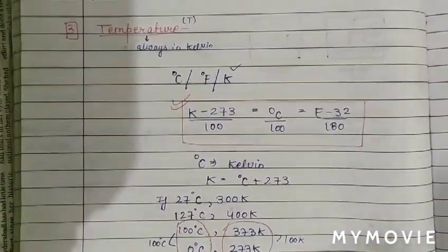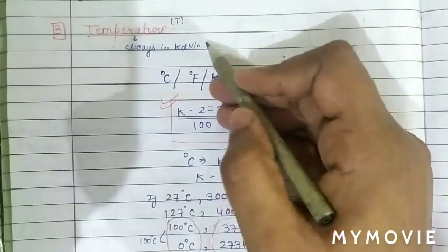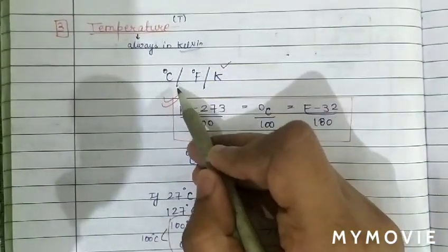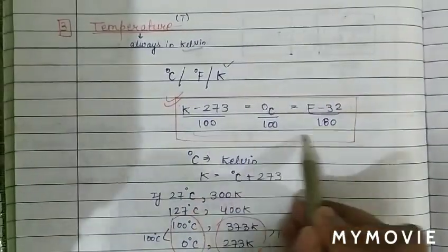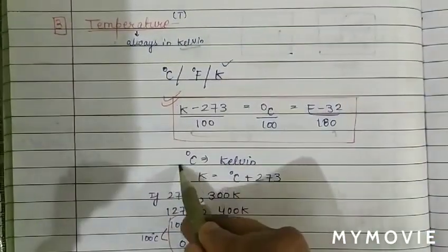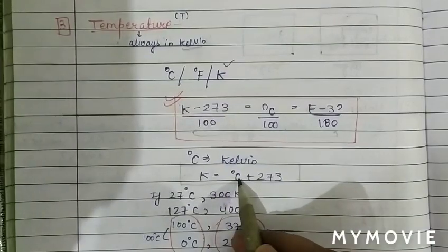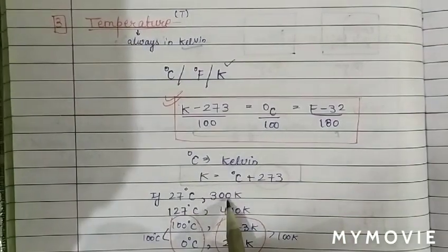The next measurable property is temperature. In calculations, we always deal with temperature in Kelvin. There are three scales: degree Celsius, degree Fahrenheit, and Kelvin. The most useful relation is T(K) = T(°C) + 273. For example, 27°C equals 300 K.